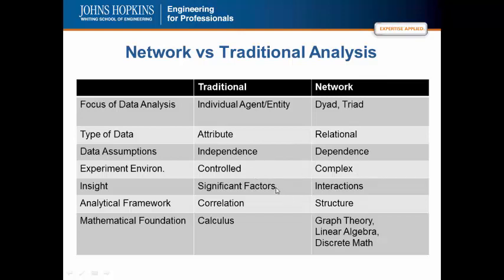In traditional studies, we look for significant factors. In network studies, we're looking for interactions. The analytic framework for traditional studies is correlation. In networks, we're looking at structure. The mathematical foundation for traditional studies is calculus. In networks, we look at graph theory, linear algebra, and discrete math, which are actually easier than calculus but just not common in the typical education, math education curriculum in America.